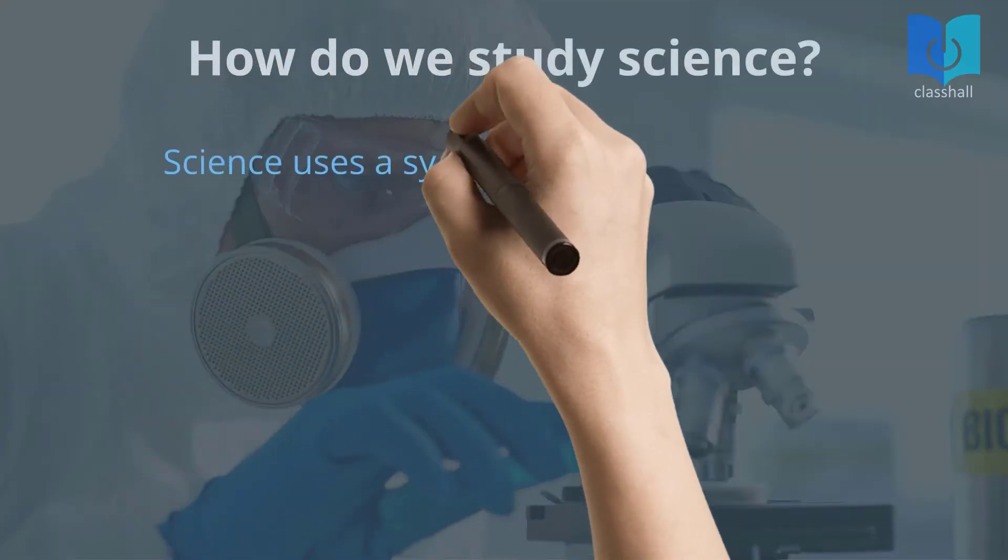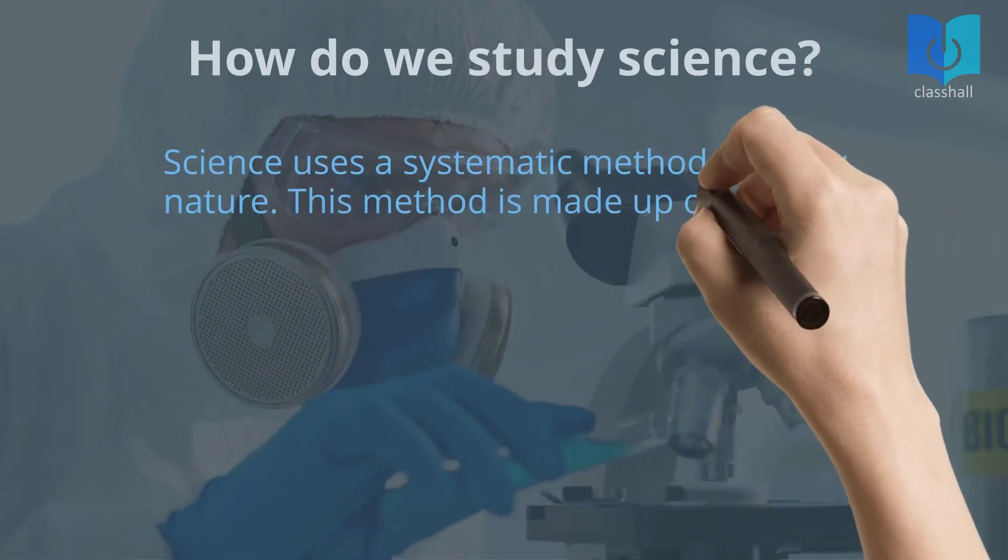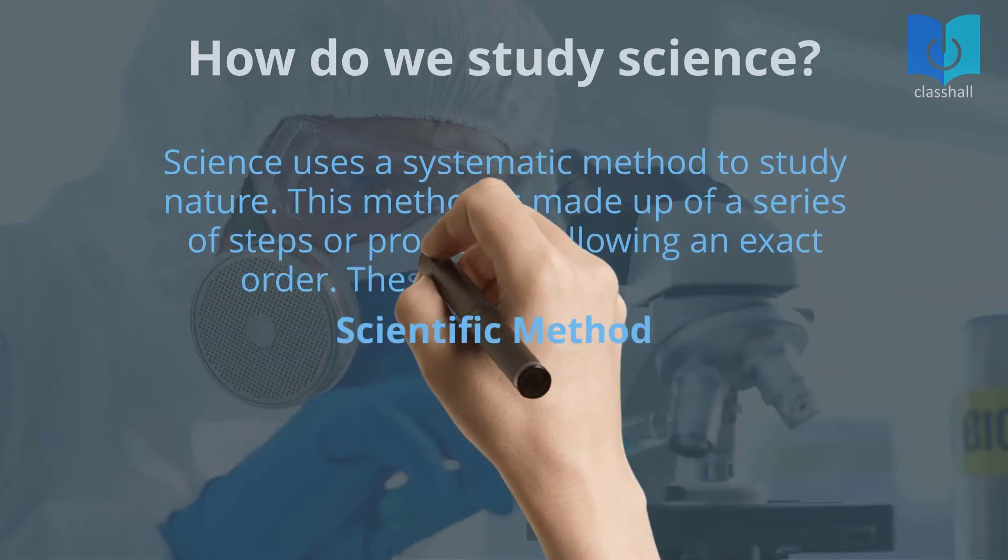Science uses a systematic method to study nature. This method is made up of a series of steps or processes following in exact order. These steps are called the scientific method.